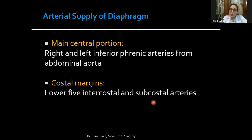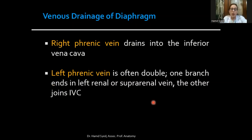Regarding arterial supply: the main central portion of the diaphragm is supplied by the inferior phrenic arteries, which are branches of the abdominal aorta, whereas the peripheral costal margins are supplied by the intercostal arteries. For venous drainage, the right phrenic vein drains into the inferior vena cava, whereas the left phrenic vein, which is often double, has one branch ending in the left renal or suprarenal vein and the other joining the inferior vena cava.